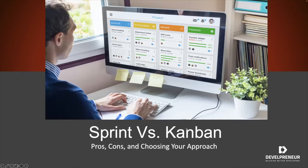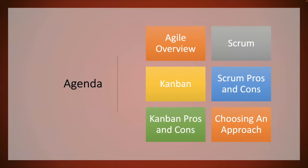I wanted to get into that and talk about the differences in the approaches. One may be much more suitable to what you're doing than the other, particularly because it deals with the types of projects you're working with and the types of changes you may expect. So I'm going to step back first and talk a little about agile, then cover scrums and sprints, the Kanban approach, pros and cons for each, and where it makes sense to use one or the other.